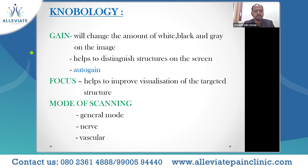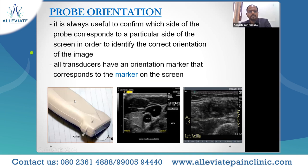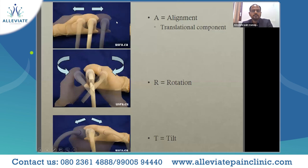Coming to the last part — knobology. Gain changes the amount of white, black, and gray on the image, helping to distinguish structures on the screen. Focus helps to improve visualization of the target structure. Important: the mode of scanning — whether general mode, nerve mode, or vascular mode. Depth settings to see deeper structures; ideally depth should be set about one centimeter deeper than the target of interest. Probe orientation: the marker on the screen tells us which side of the image we are visualizing. Probe manipulation uses the mnemonic PART: P for pressure, A for alignment, R for rotation, and T for tilt.